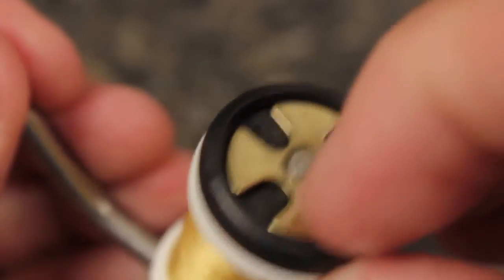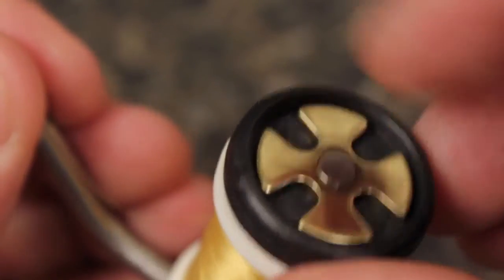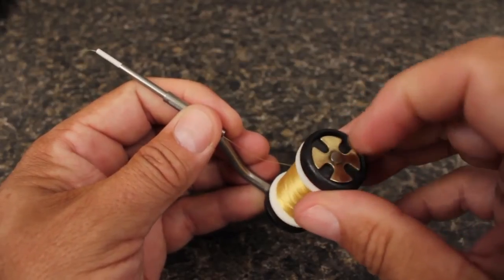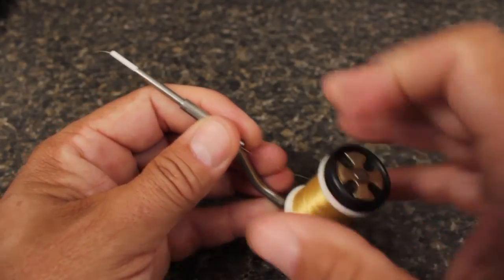Continue turning the knob clockwise until the desired drag tension is achieved. Each click changes the thread tension by approximately one ounce for precise thread control.